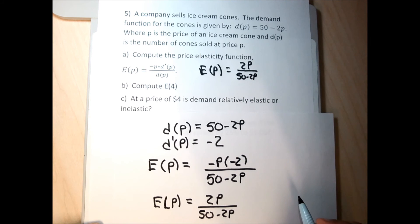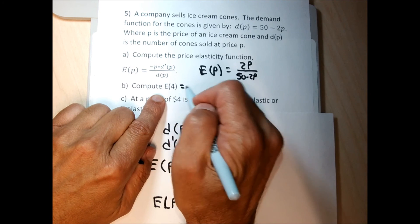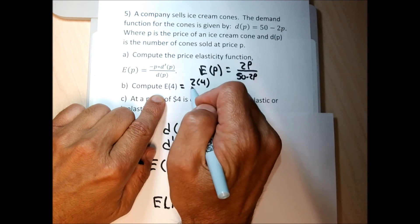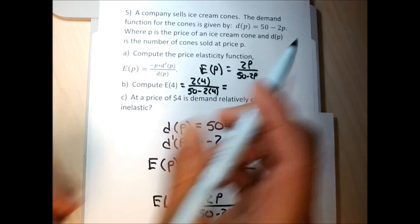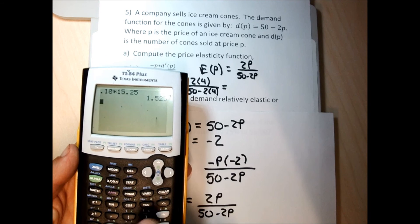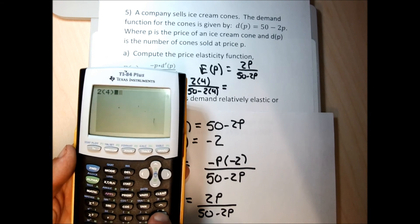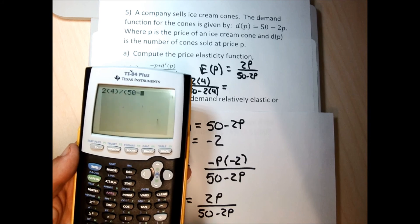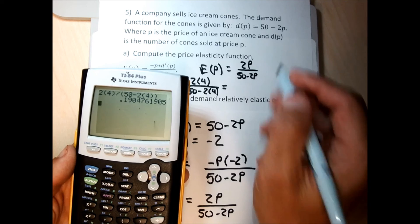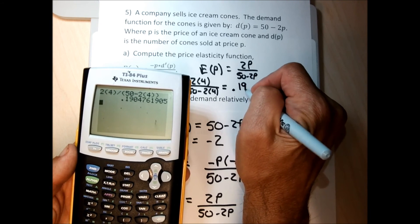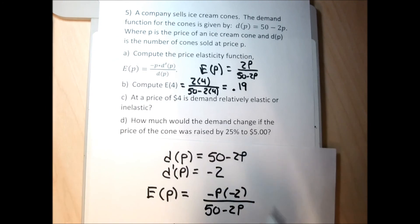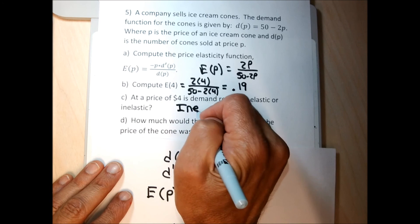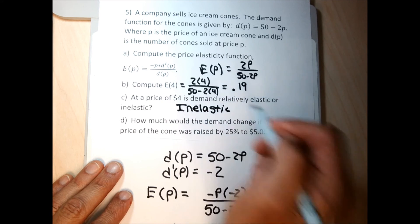You could factor out a 2 and clean the function up, but I'll leave it as is. For E(4): 2 times 4 over 50 minus 2 times 4, using the calculator with parentheses, gives 0.19. Since 0.19 is less than 1, at a price of $4 demand is relatively inelastic. If it's less than 1 it's inelastic; if it's bigger than 1 it's elastic.